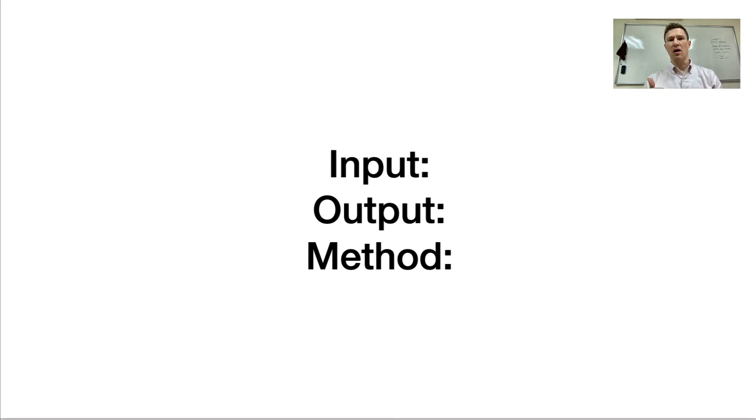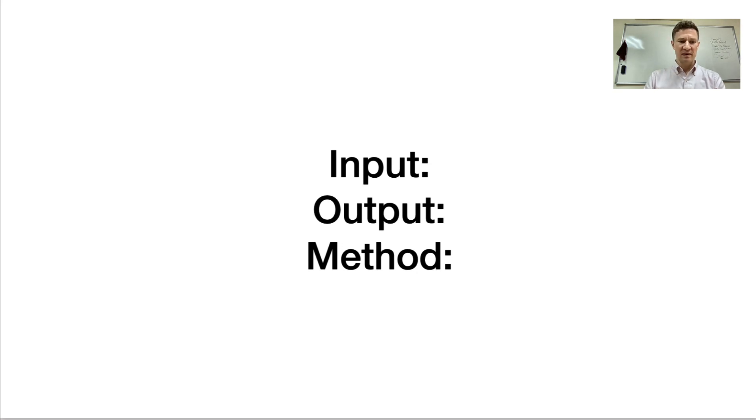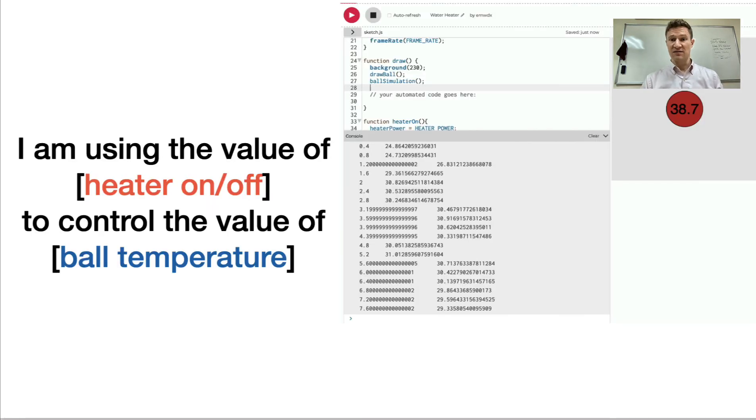And the method is the algorithm. The method is how we are using the input to control the output and create that feedback loop so that the input is what we want it to be. So you should very clearly be able to state this about any control problem that you're trying to use.